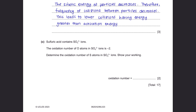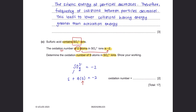Question C: Sulfuric acid contains sulfate ions. The oxidation number of oxygen atoms in sulfate ions is −2. Determine the oxidation number of sulfur atoms in sulfate ions, showing your working. First, the overall charge of the sulfate ion is −2. We have 1 sulfur atom and 4 oxygen atoms. Substituting: S + 4(−2) = −2. Rearranging gives the oxidation number of sulfur as +6.